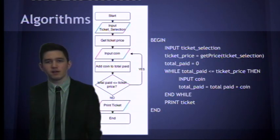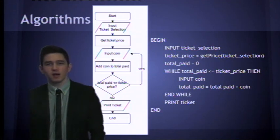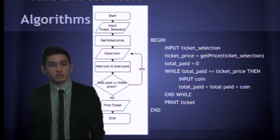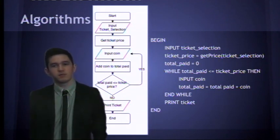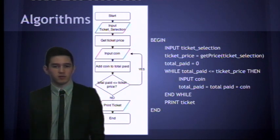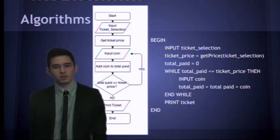Now, if I slide slightly over, you can see the flowchart again. And there's the pseudo code for it. Input ticket selection. It gets the ticket price. Total paid is set to zero. So, we set the variable as an empty variable, so I can add to it.